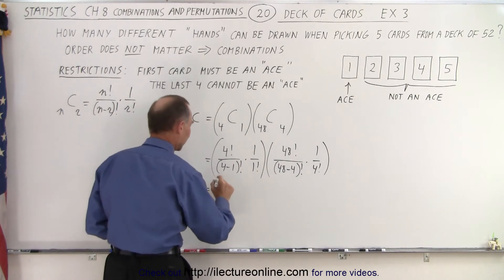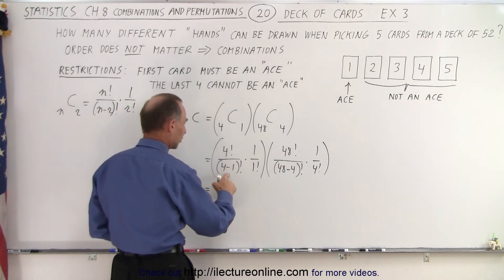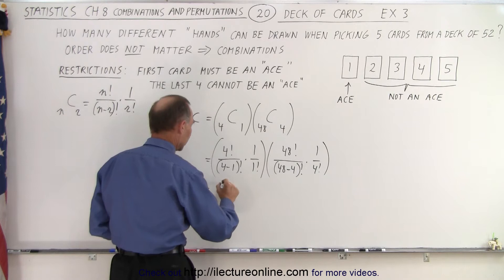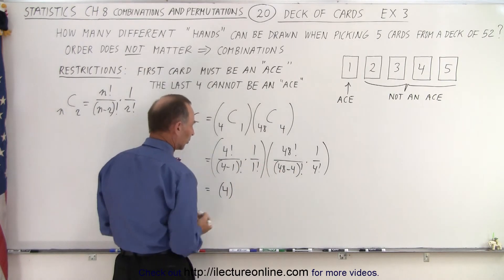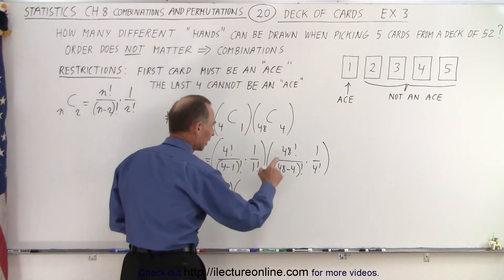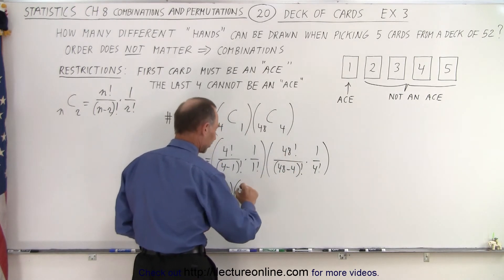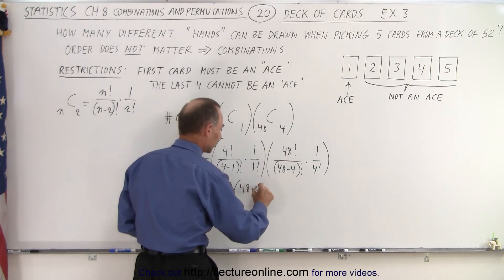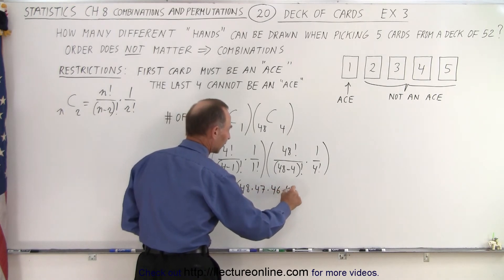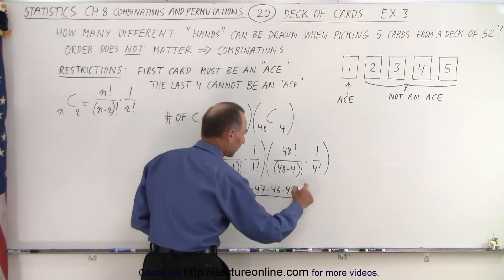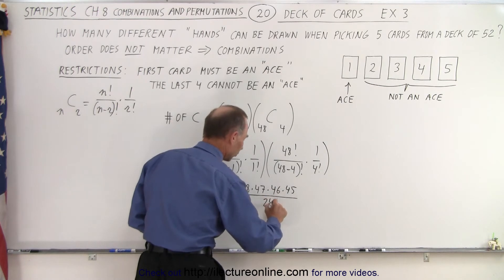So simplifying that we get 4 factorial divided by 4 factorial which is simply 4 times 1 over 1, which is just 1. Times here we get 48 factorial divided by 44 factorial, so that's 48 times 47 times 46 times 45, and then divide that by 4 factorial which is 24.